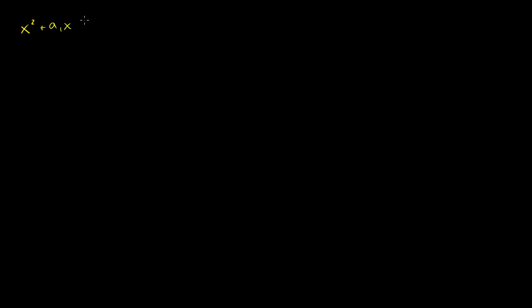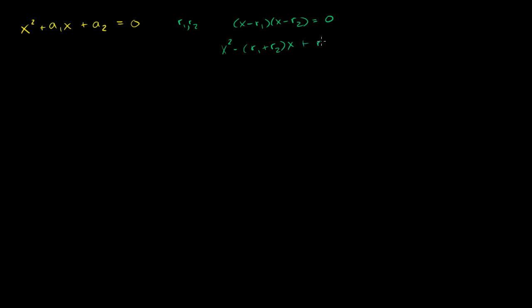Let's say that I have a second degree polynomial that looks like this: x squared plus a1x plus a2 is equal to 0. This thing is going to have two roots r1 and r2, which tells us it can be rewritten as x minus r1 times x minus r2 equals 0. If you expand this out, you get x squared minus (r1 plus r2)x plus r1 times r2.